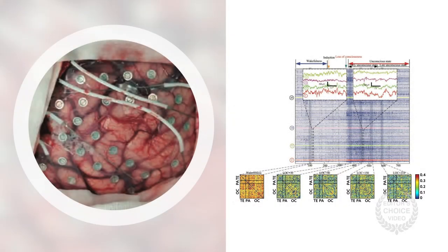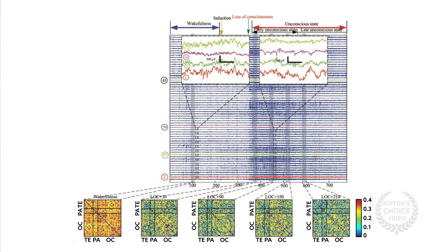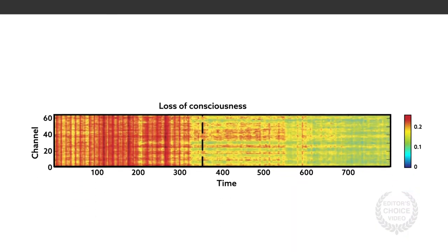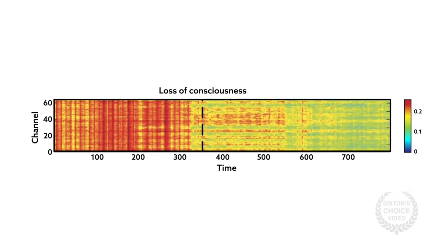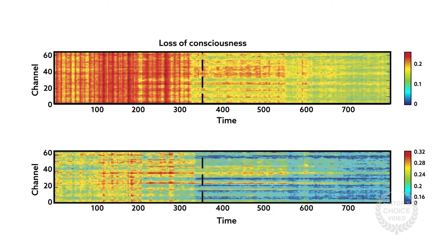To understand the network changes as anesthesia set in, the group assessed one patient with electrodes placed in the temporal, parietal, and occipital lobes as a case study. The GPCMI values fell after loss of consciousness and were generally higher in the occipital area compared to the parietal region. In addition, the nodal clustering coefficient decreased and the nodal efficiency dropped abruptly around the same time of loss of consciousness.